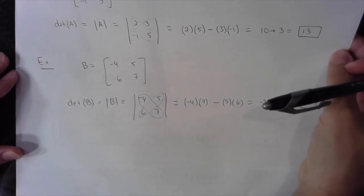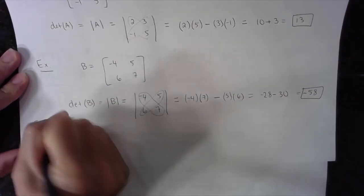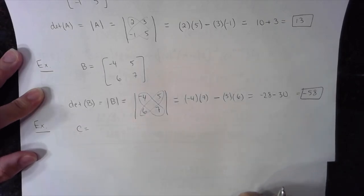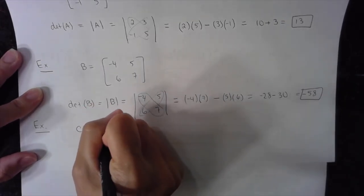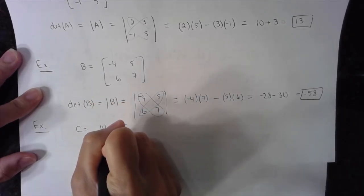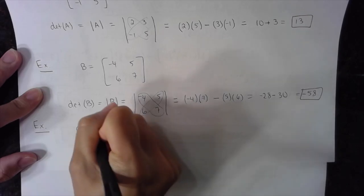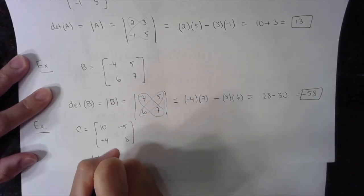One more example. Matrix C. Let's say it is 10, negative 5, negative 4, and 8. Here's matrix C and I want the determinant of C.